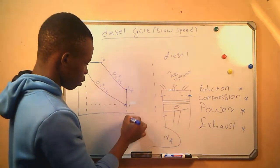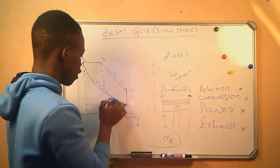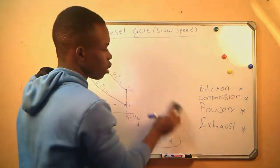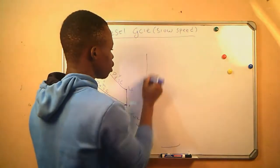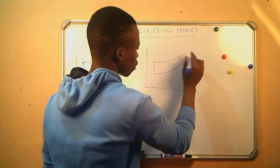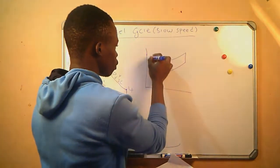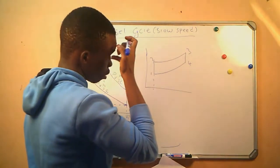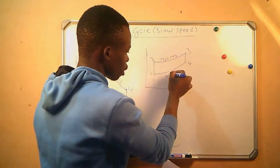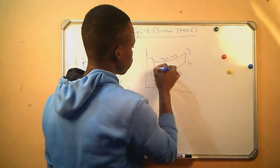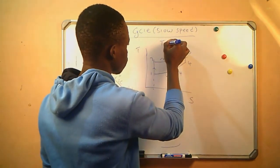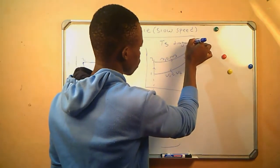Since we already know that we ignore the exhaust and induction strokes, we take it as if we are using the same air inside the chamber. The points are one, two, three, and four. V1 equals V4 here; we'll have V3 here and V2 here. Our TS diagram is drawn similarly, with points one, two, three, and four. S2 equals S3 and V1 equals V4. This is the TS diagram and this one is the PV diagram.